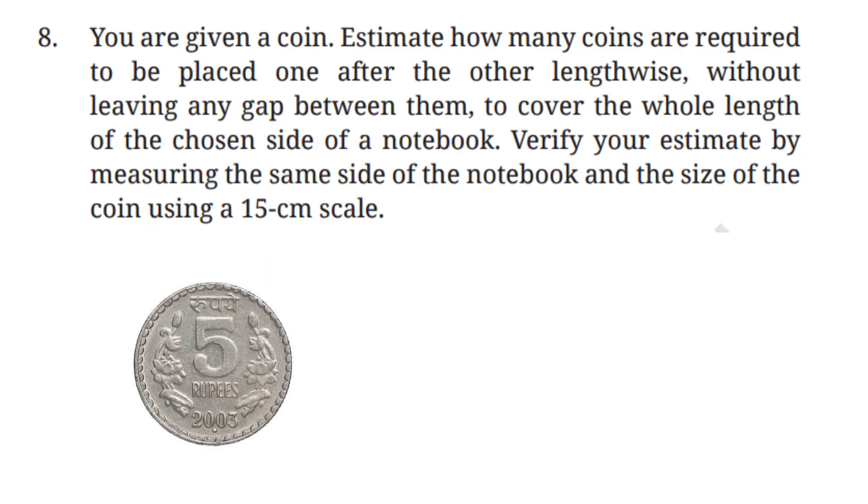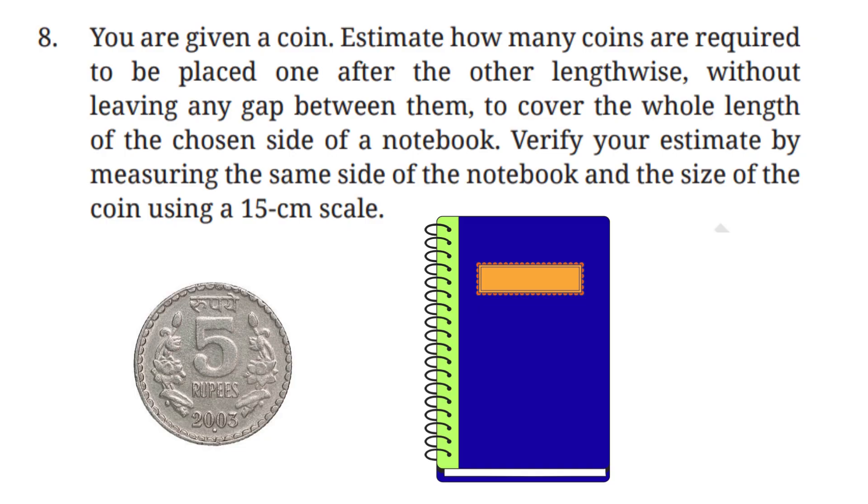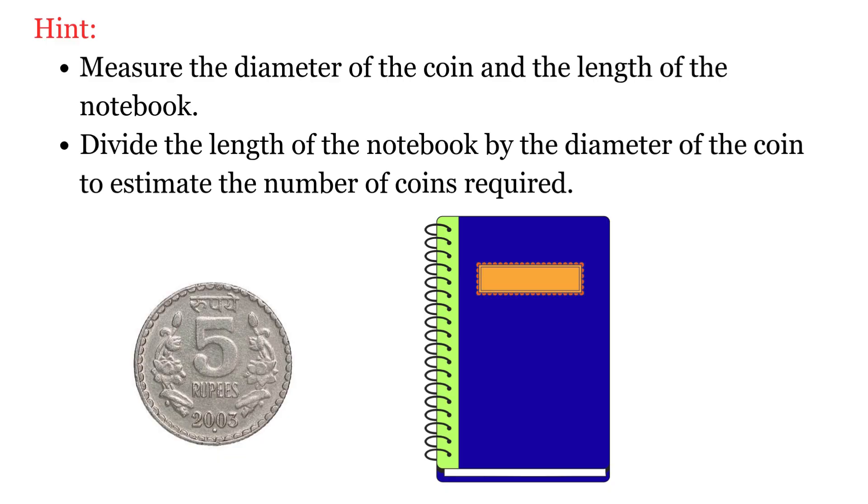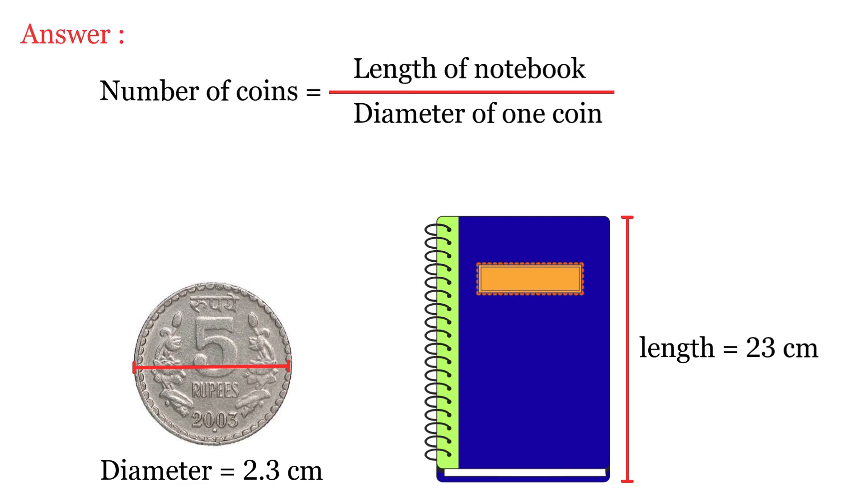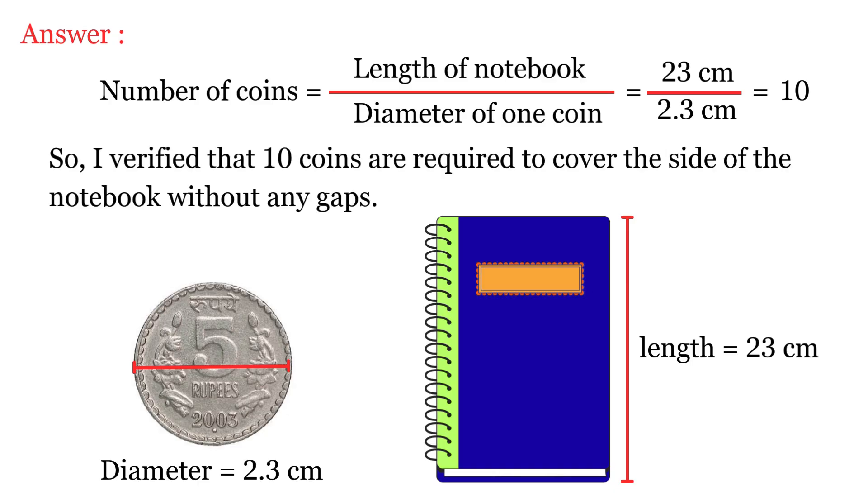Question No. 8: You are given a coin. Estimate how many coins are required to be placed one after the other lengthwise without leaving any gap between them to cover the whole length of the chosen side of a notebook. Verify your estimate by measuring the same side of the notebook and the size of the coin using a 15 centimeter scale. So you have to measure the diameter of the coin and the length of the notebook, then divide the length of the notebook by the diameter of the coin to estimate the number of coins required. So using a 15 centimeter scale, you measured the length of the notebook side and found it to be 23 centimeters and the diameter of one coin is 2.3 centimeters. To find out how many coins would fit along the notebook's length, you divided 23 centimeters by 2.3 centimeters and the answer is 10. So 10 coins placed in a line would exactly cover the length of the notebook.